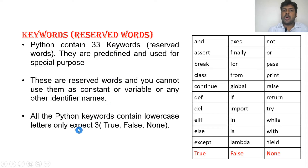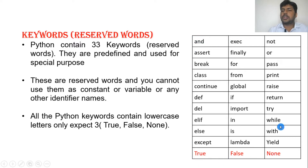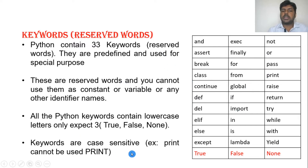All Python keywords contain lowercase letters only, except three: True, False, and None. You can see that the first letter of these three keywords is a capital letter, while the remaining 30 keywords are all in lowercase and cannot be written in uppercase. Keywords are case sensitive — that means if a keyword like 'and' is in small letters, you cannot write it in capital letters.